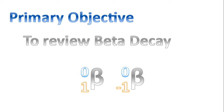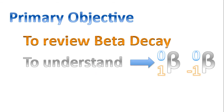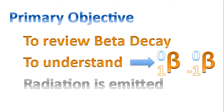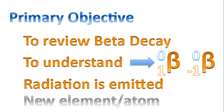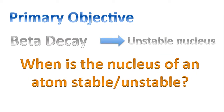Good morning! Today our primary objective will be to review beta decay. Specifically, we'll try to understand what those symbols mean. We'll come to understand that radiation is emitted during a beta decay, and that a new element or atom is formed. Ultimately, beta decay happens because a nucleus is unstable. So the question we'll be answering is: when is the nucleus of an atom stable or unstable?